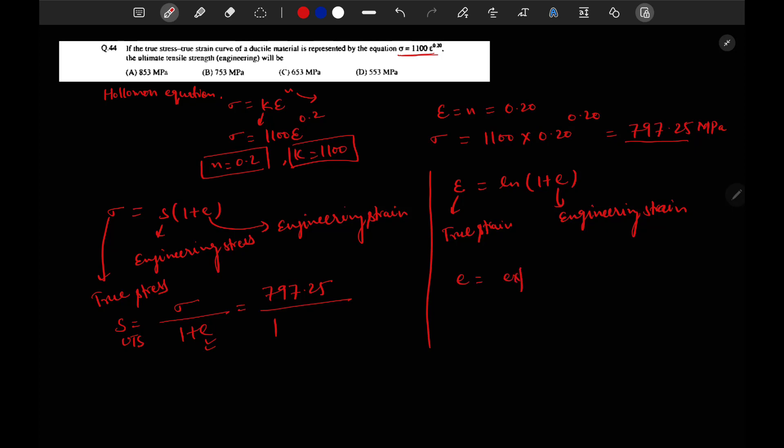E will be equal to exponential epsilon minus 1. At maximum engineering strain, maximum engineering stress, E equal to exponential, this epsilon will be equal to n which is 0.2 minus 1, that means 0.2214.